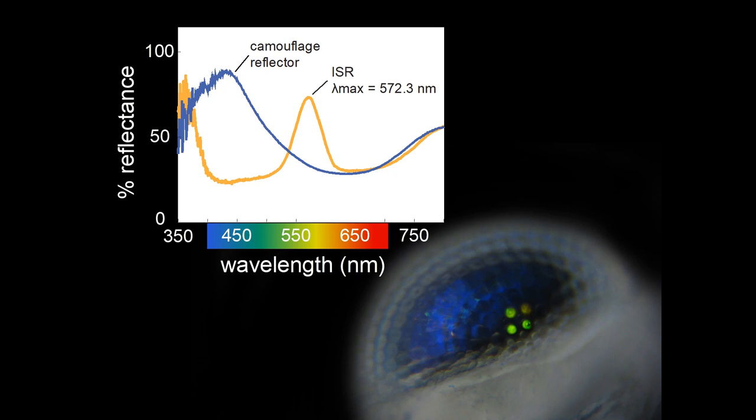Our spectral analysis revealed that the ISR reflects a band of wavelengths in the yellow region of the spectrum, while the camouflage reflector is a much broader curve that peaks in the blue.